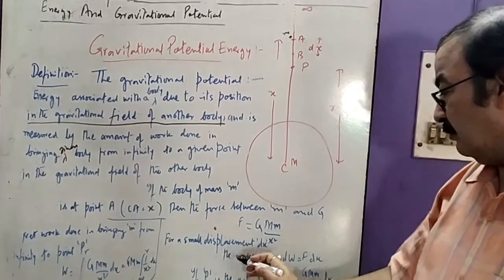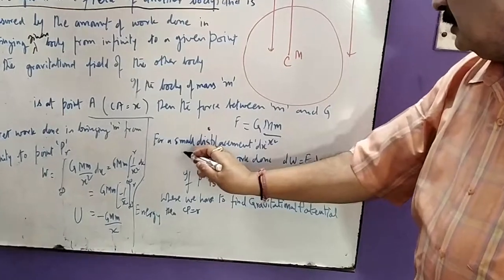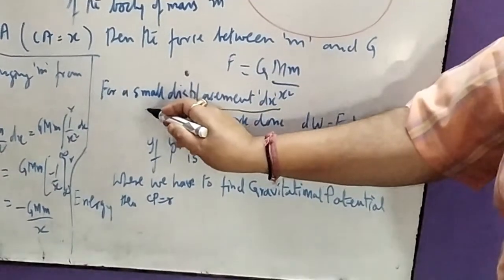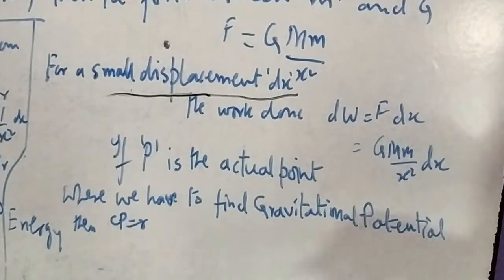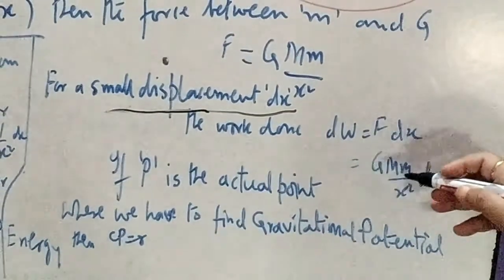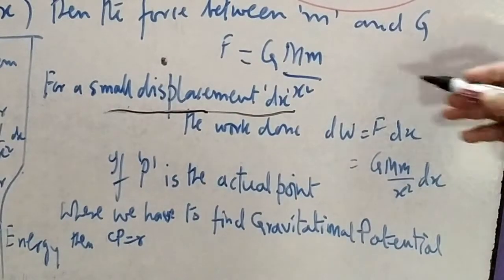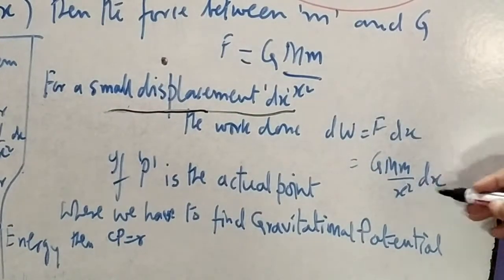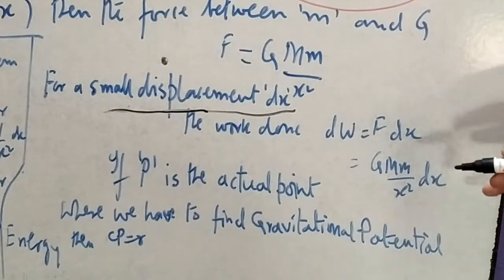For a small displacement dx, the work done will be dW equal to F into dx. F is already known. In terms of this we get the elemental work done. But this is not the actual point where we have to find out the gravitational potential energy — rather, this is the point P where we have to determine the gravitational potential energy due to mass M.